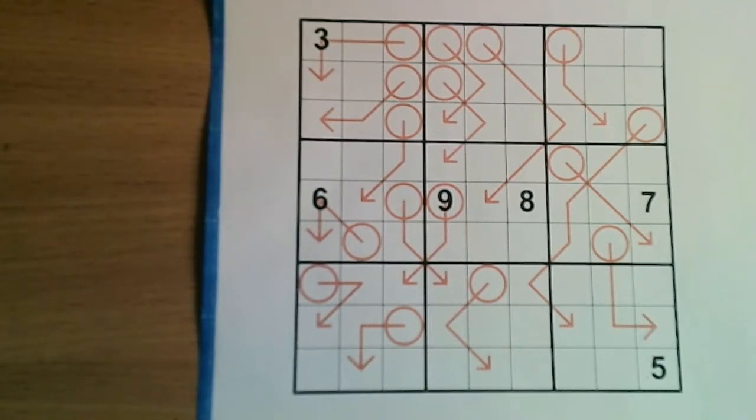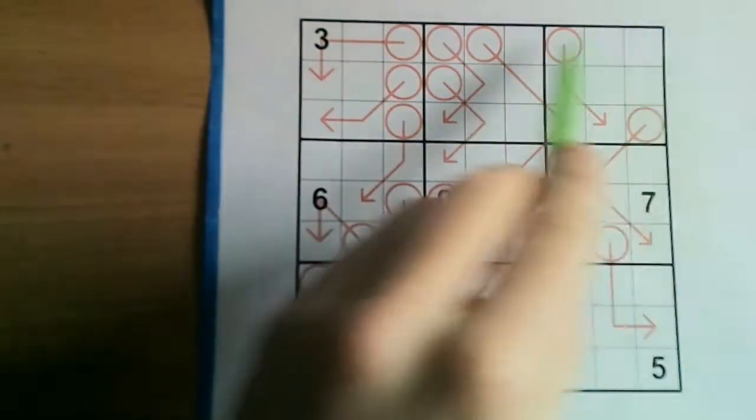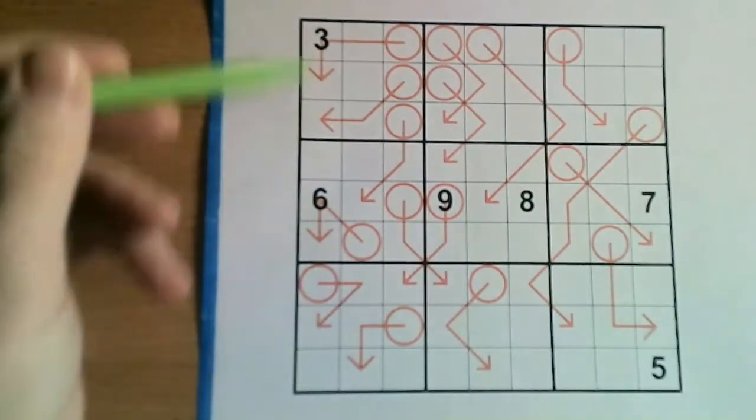So today we're going to look at how to solve an Arrow Sudoku puzzle, also known as Sudoku Arrow. First of all, let's look at the rules, and then we'll go through some of the implications of the rule set, which may not be immediately obvious. The first rule is the same as standard Sudoku. You must place the numbers 1 to 9 once in each row, each column, and in each 3x3 box.